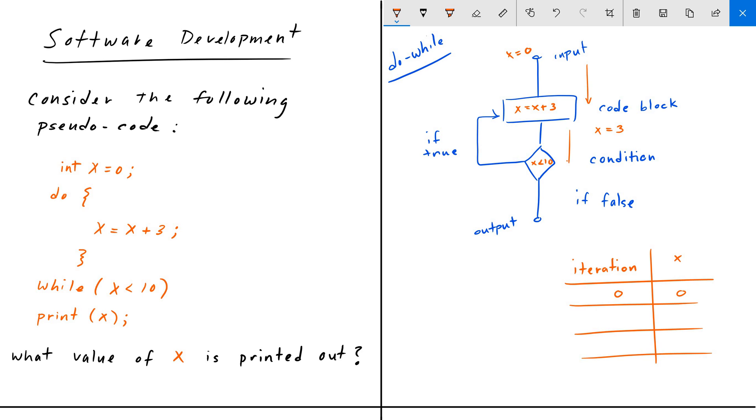And then we go down and we hit the condition. Is X less than 10? And yes, three is less than 10. So the condition is true. So we go up and then we increment it again.